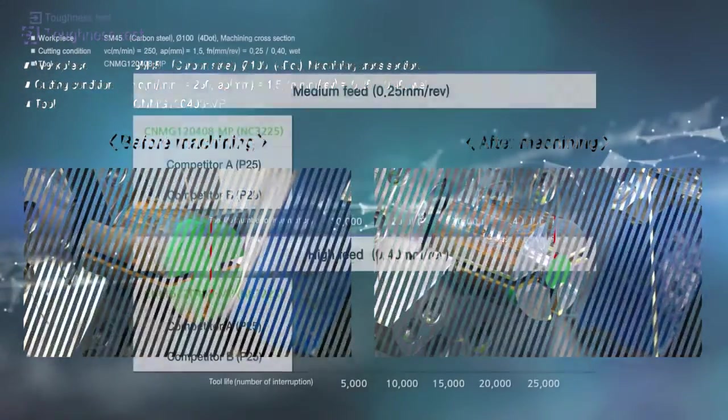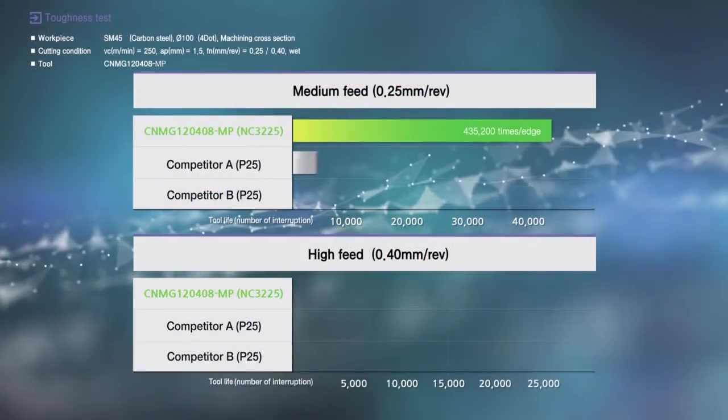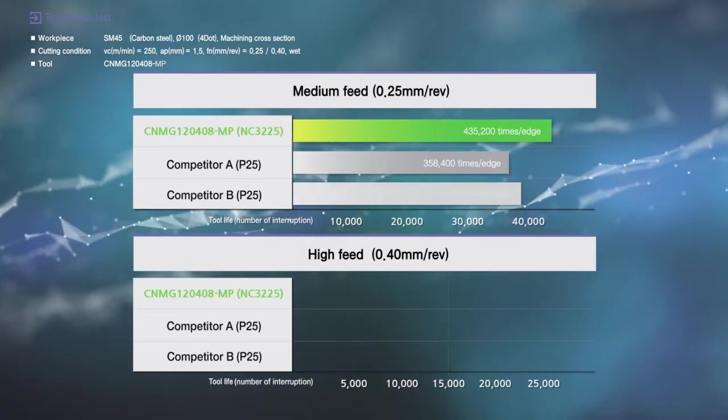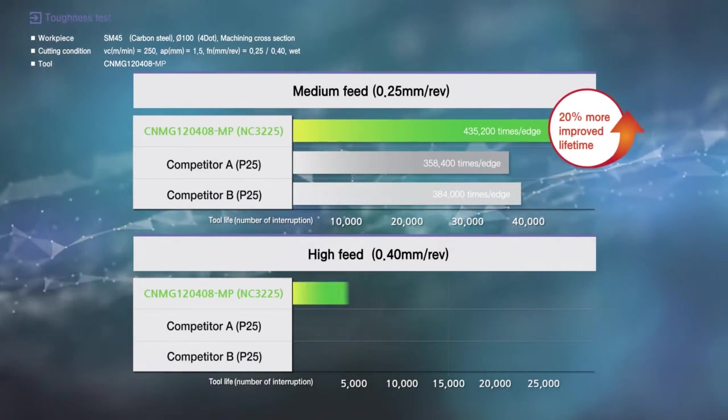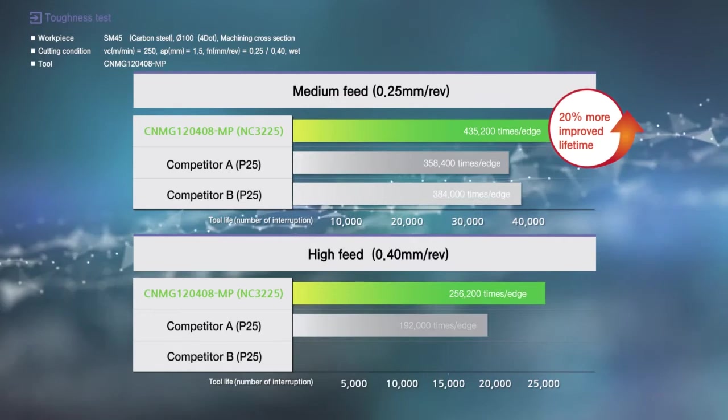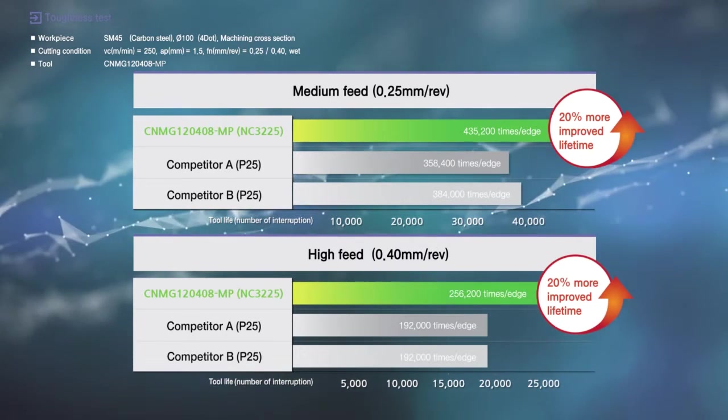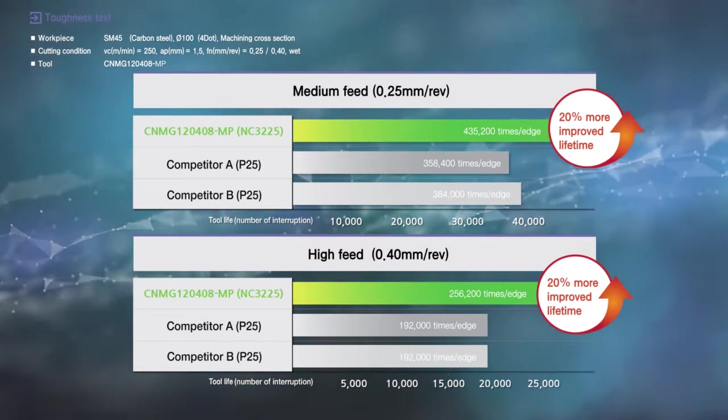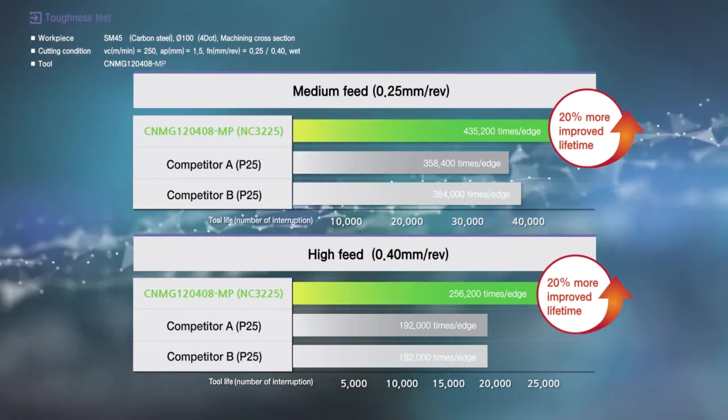NC3225 and 3215 with new MP-LP chip breakers. The new LP chip breaker enables stable productivity with efficient chip evacuation using the Quad-Dot system and multi-feed rates.